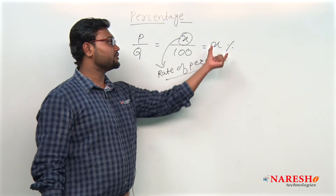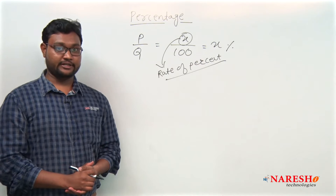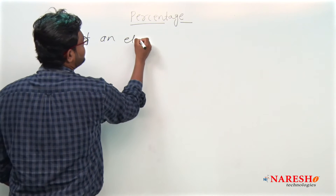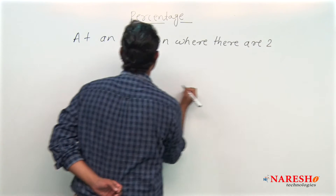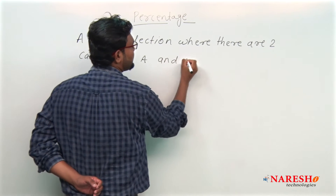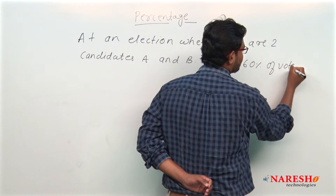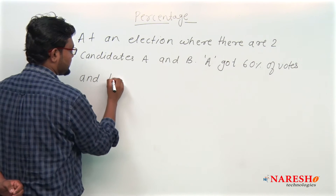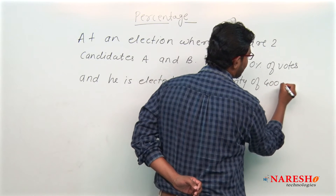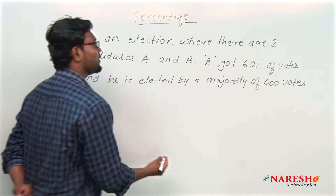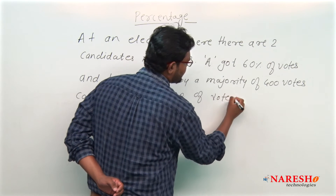So x is called the rate of percent — I will refer to it as x percentage. Now let us see a question on the basics of percentage. At an election where there are two candidates A and B, candidate A got 60 percent of the votes and he is elected by a majority of 400 votes. Calculate the total number of votes recorded.